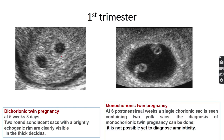The key difference: in dichorionic diamniotic twin pregnancy, two gestational sacs are seen. In monochorionic diamniotic twin pregnancy, a single gestational sac is formed, surrounded by a bright echogenic area representing the single chorion.